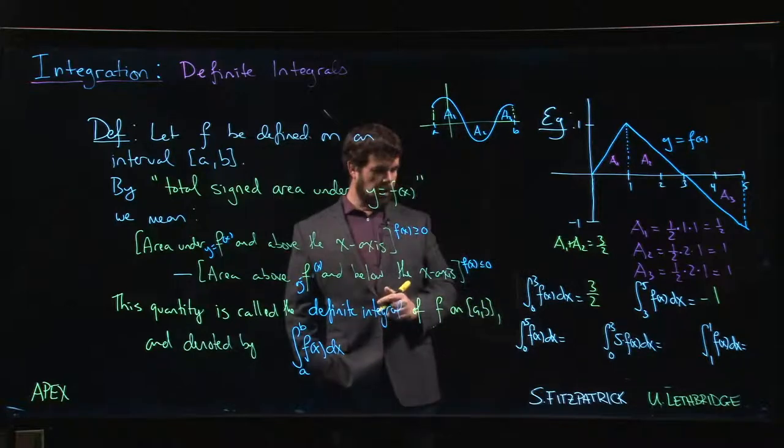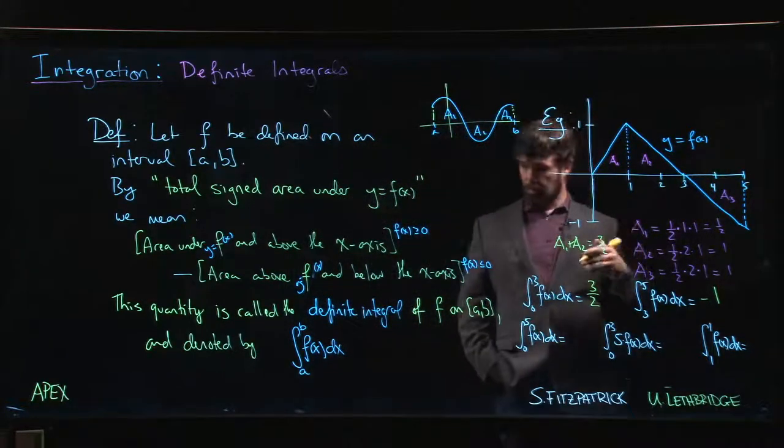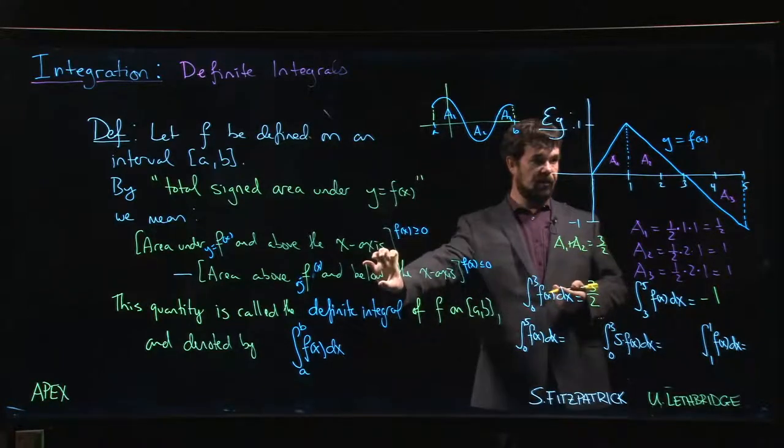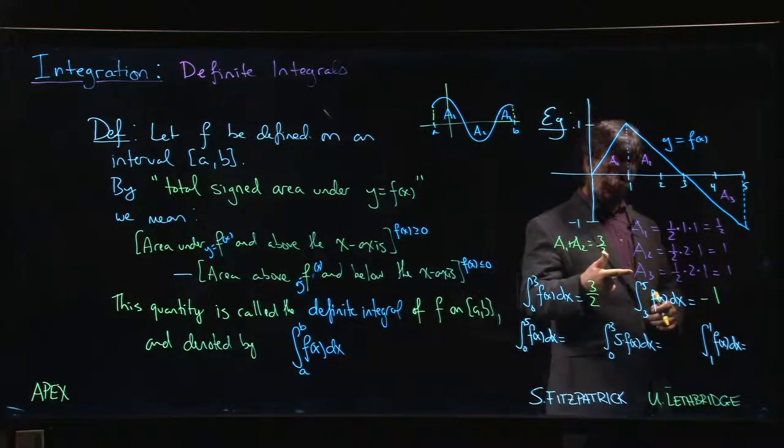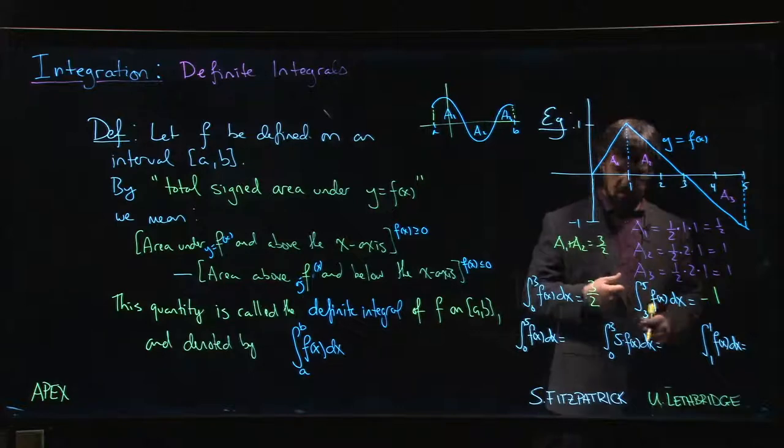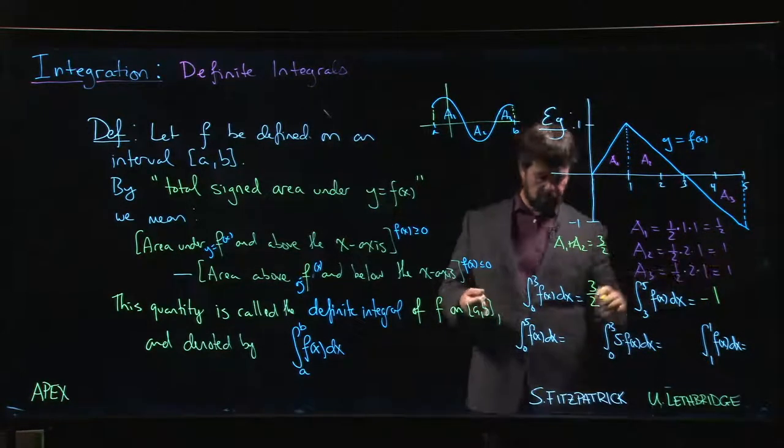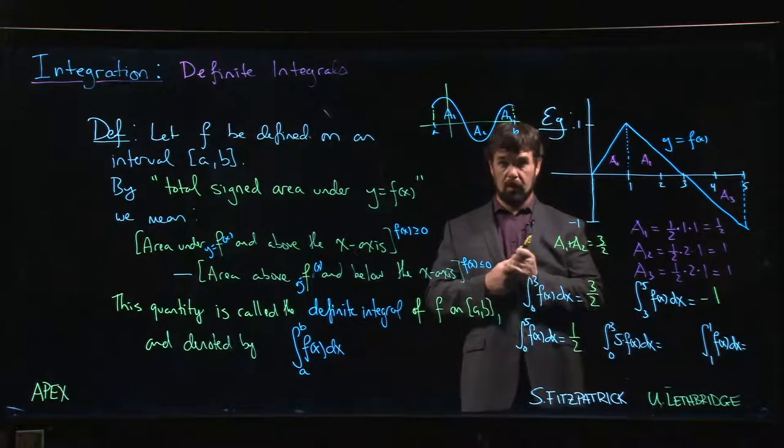Now, if I want the integral from 0 to 5 going all the way from beginning to end, we want total signed area. So area above minus area below, meaning that we should do A1 plus A2, and then we should subtract A3. So that means we do one half plus 1 minus 1, and we're left with one half.